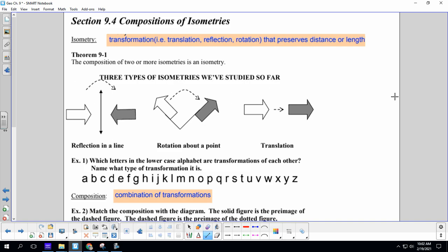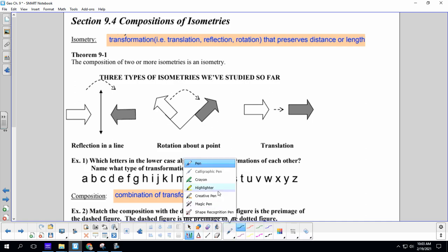So 9.4 is the compositions of isometries. An isometry, please write this down, is a transformation like a translation, reflection, or rotation that preserves distance or length.